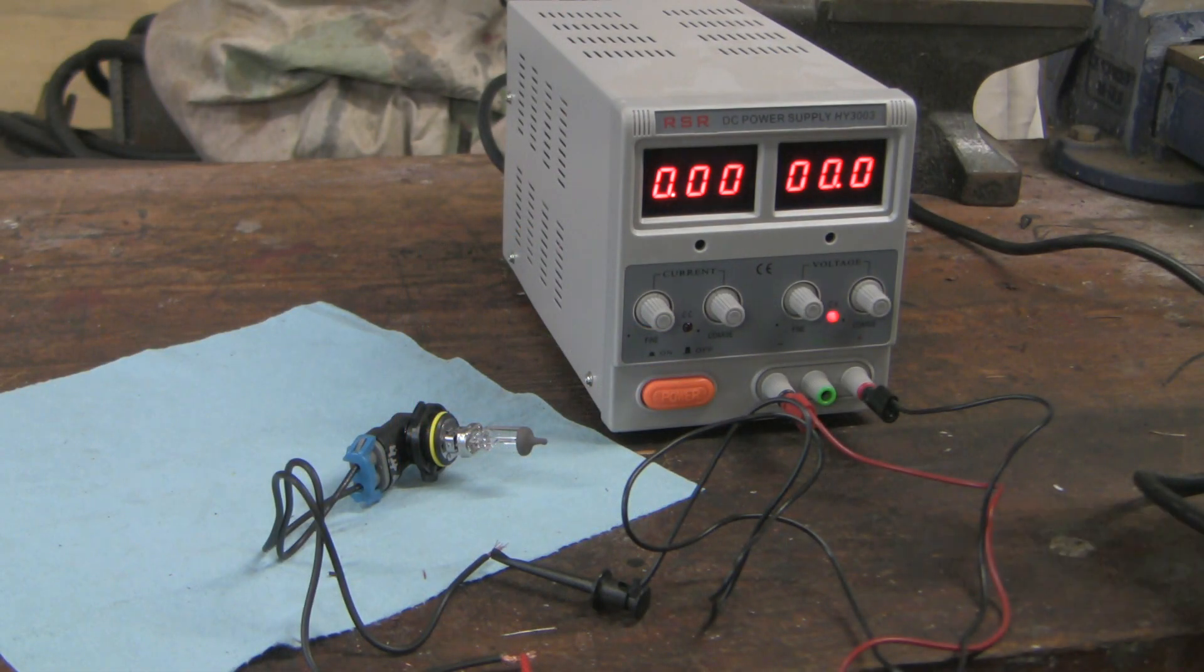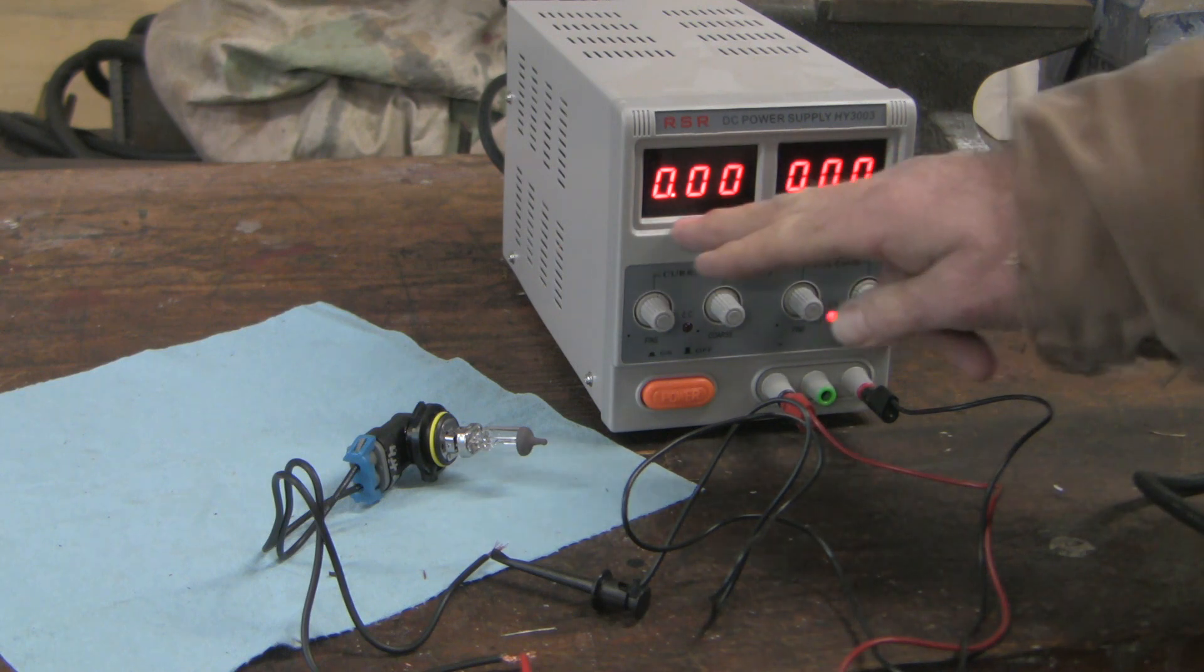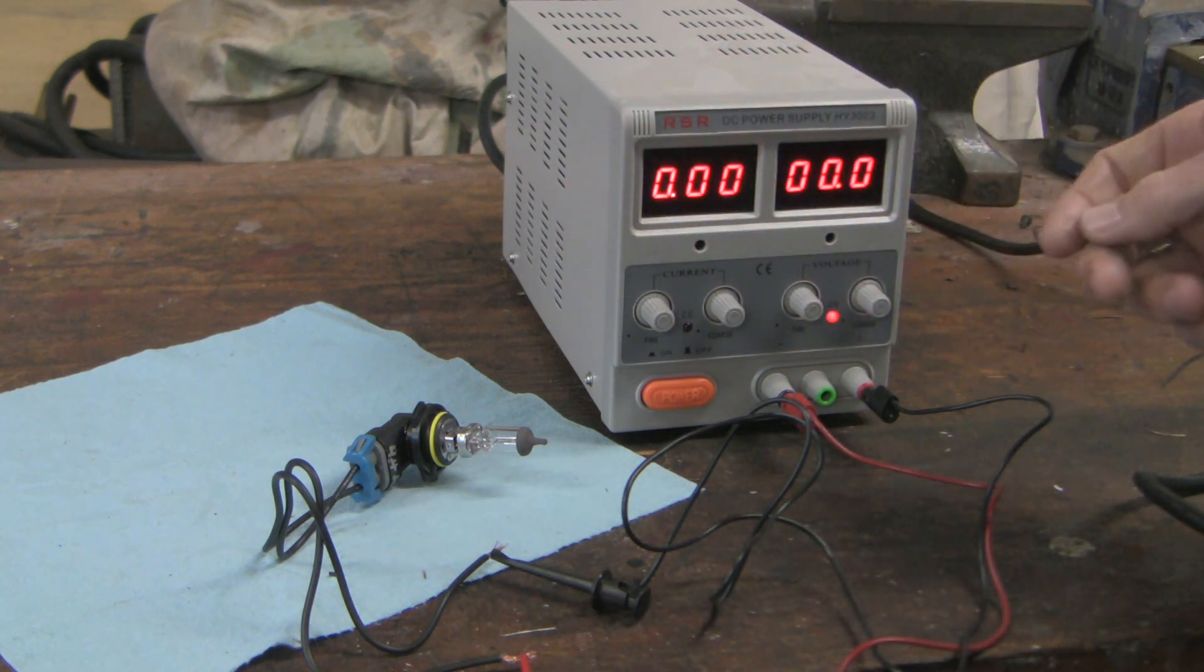Okay for this next part I've switched over to a power supply and this is applied voltage here and this is measured current here and we're just hooked up to the light bulb.